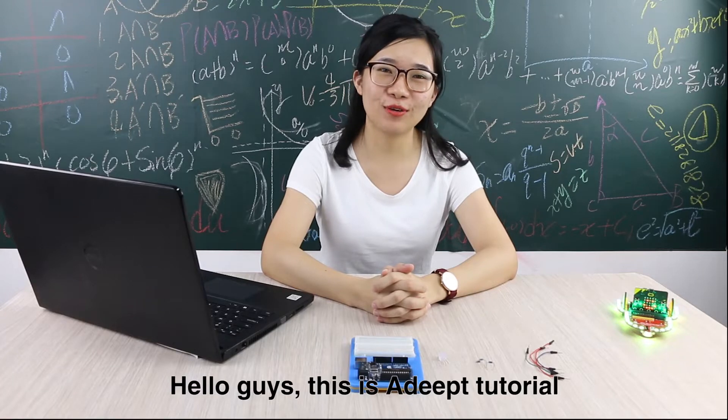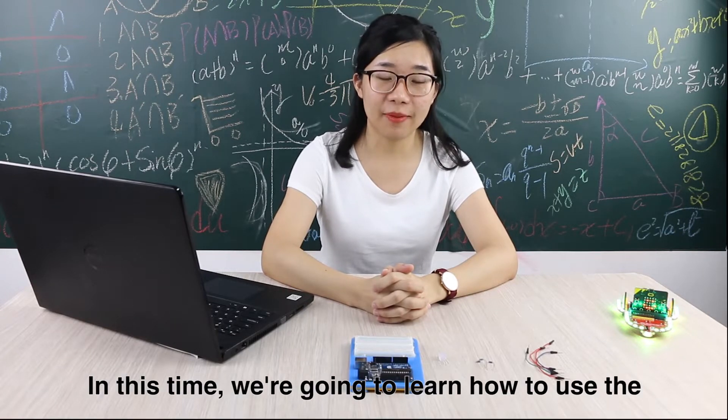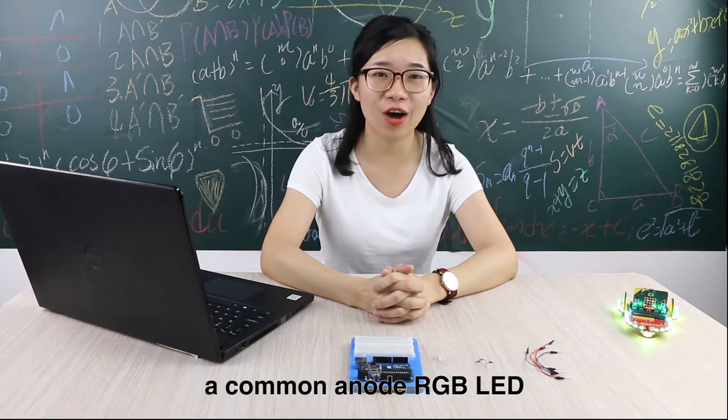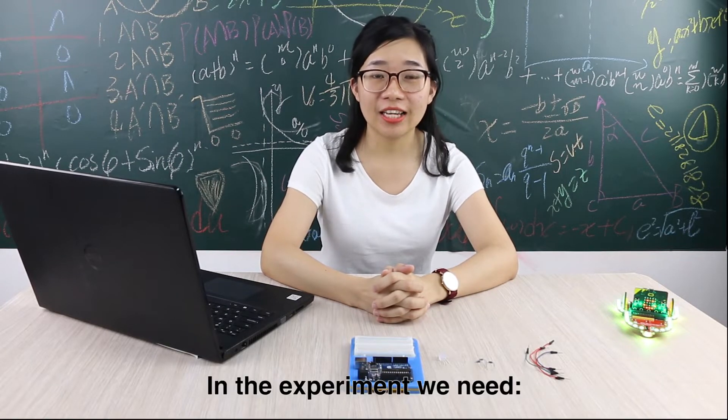Hello guys, this is the DIP tutorial. In this time, we're going to learn how to use the Arduino UNO R3 board to control a common anode RGB LED.